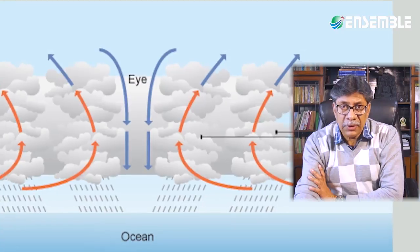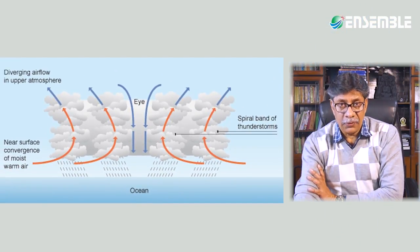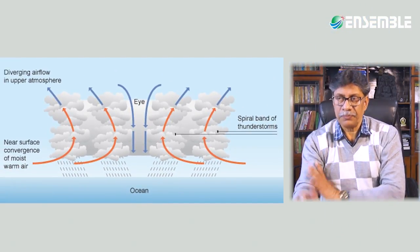The eighth condition is well-developed divergence in the upper troposphere, because surface pressure will fall only when the outflow from the system aloft exceeds the surface inflow. Not every tropical disturbance develops into a full-blown tropical cyclone — many develop only as depressions, then may graduate into a storm, and gradually into a tropical cyclone.